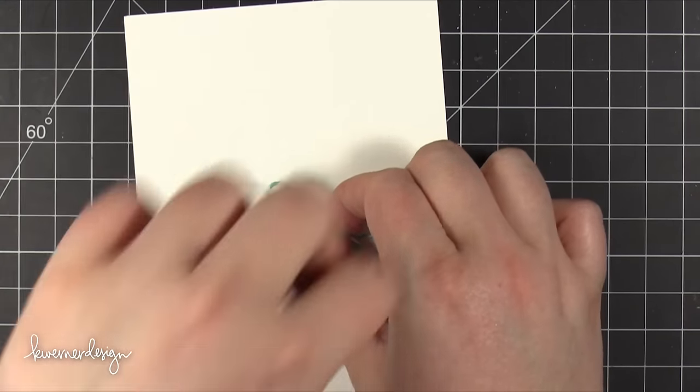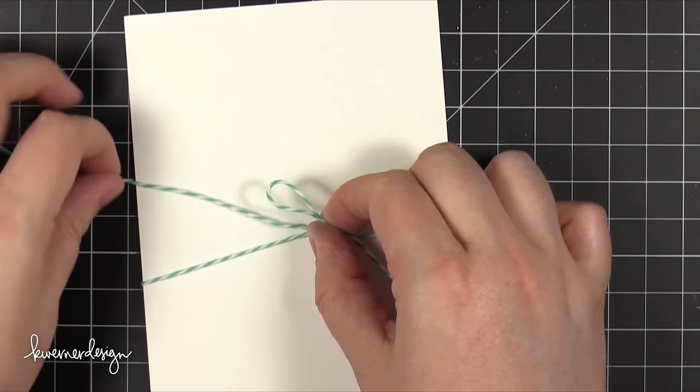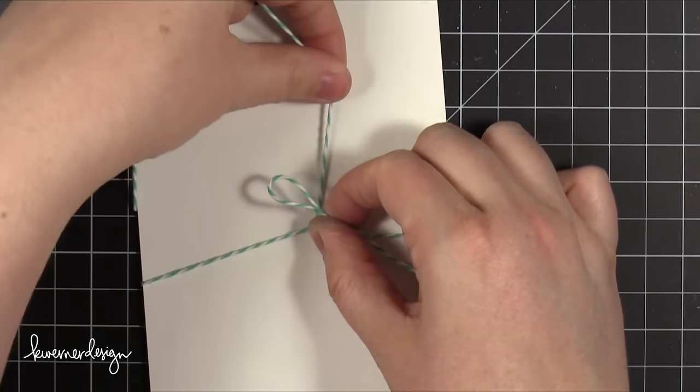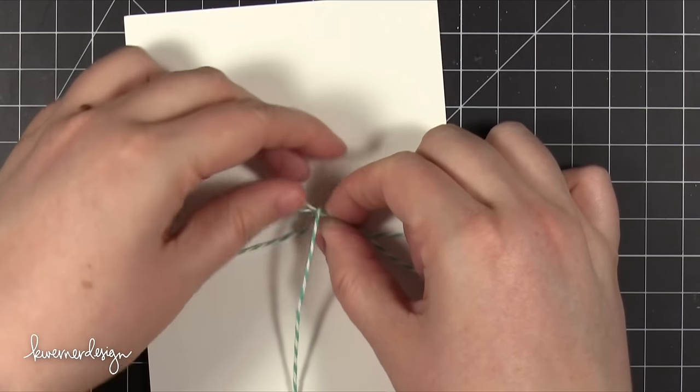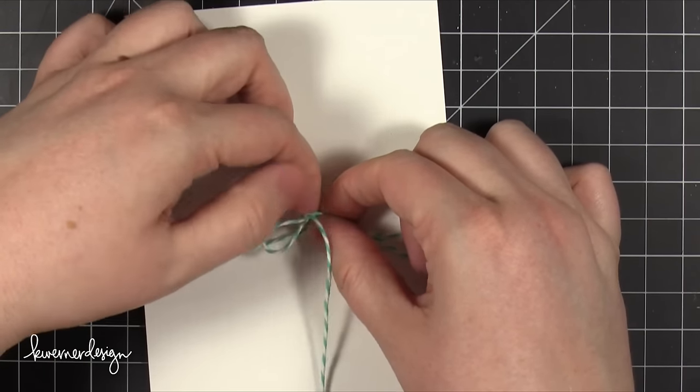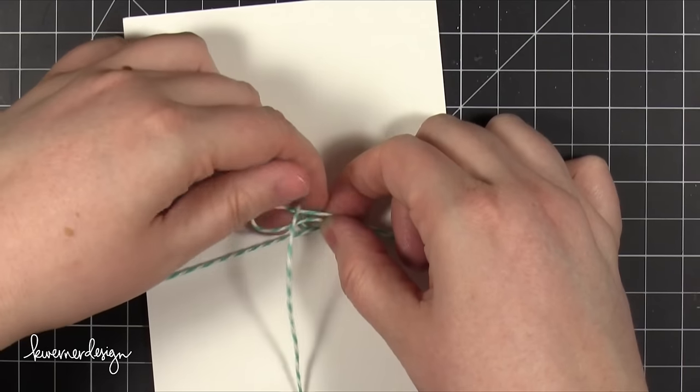And my first inclination is to take this over and under again, but I'm not. I'm going to have it go under. See that? Going under, under and over. And then through the loop.